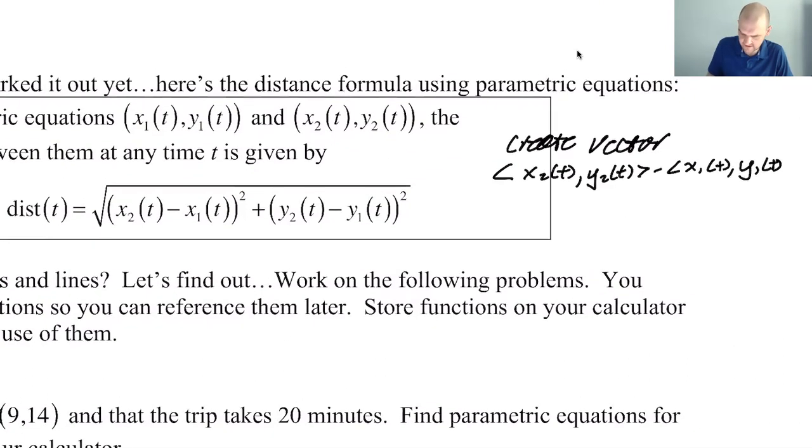What I like to do instead of actually typing that in is I like to create a vector. So I'll create a vector that's like x2(t) minus x1(t), y2(t) minus y1(t). Then I find the norm of v(t), and that gives you the distance formula. I think that's easier to do, but you can do it however you want.